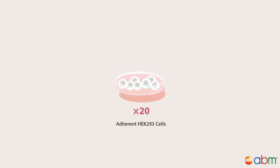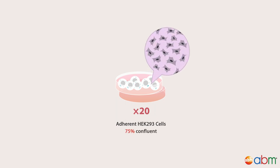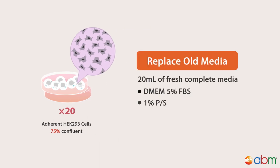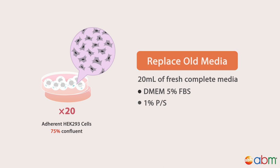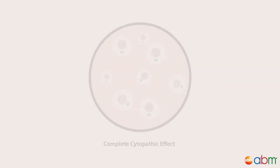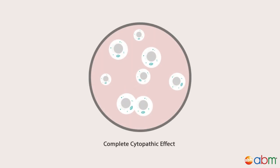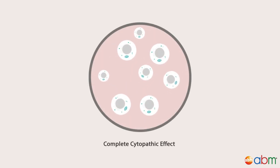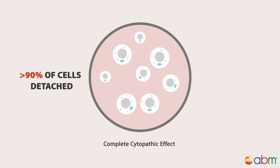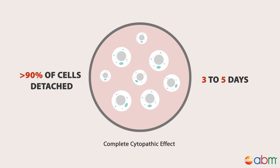Prepare 20 plates of HEK293 cells in 15 cm cell culture dishes at 75% confluent at the time of seedstock infection. Replace the old media from each plate with 20 ml of fresh complete media before inoculating with 1 ml of seedstock per plate. Incubate until the cells exhibit complete cytopathic effect, where greater than 90% of the cells have detached from the plate. This process should take approximately 3 to 5 days.